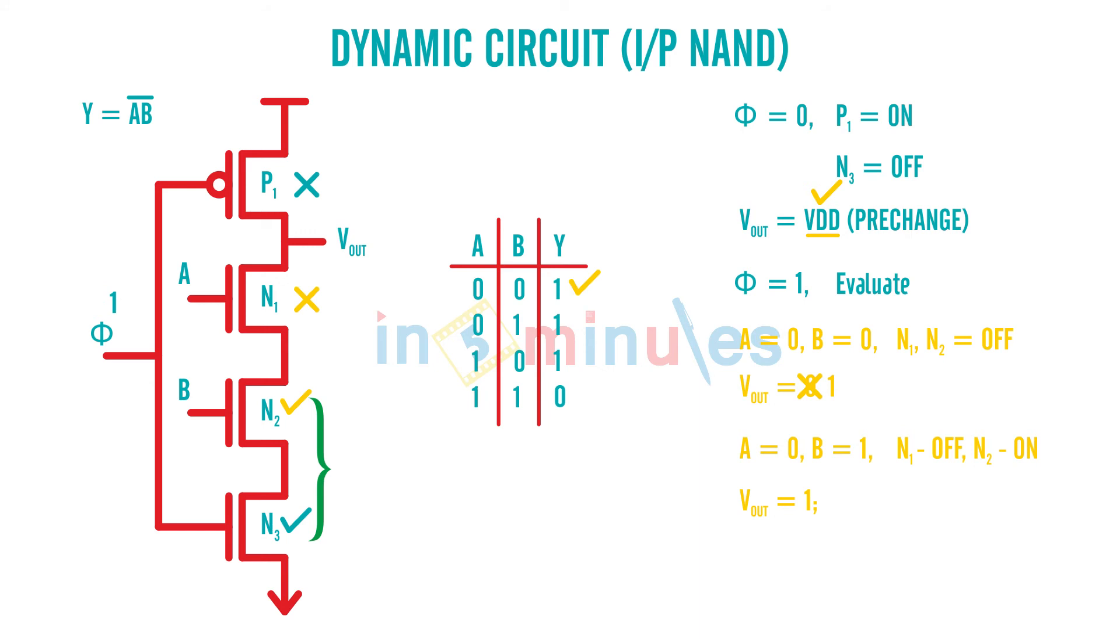We can show the same case when A is 1 and B is 0. When A is 1, B is 0, N1 is on.